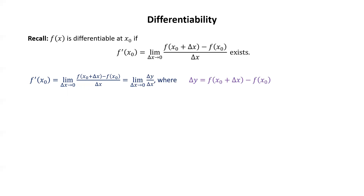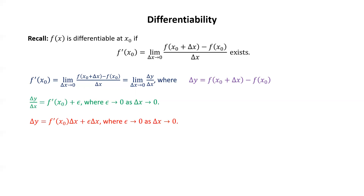We can rewrite the limit as delta x goes to 0 of f(x₀ + delta x) minus f(x₀) over delta x as the limit as delta x goes to 0 of delta y over delta x, where delta y equals f(x₀ + delta x) minus f(x₀). Another way to say f prime of x₀ equals that limit is to say that delta y over delta x equals f prime of x₀ plus a little error epsilon, where epsilon goes to 0 as delta x goes to 0. Multiplying through, delta y equals f prime of x₀ times delta x plus epsilon times delta x, where epsilon goes to 0 as delta x goes to 0.